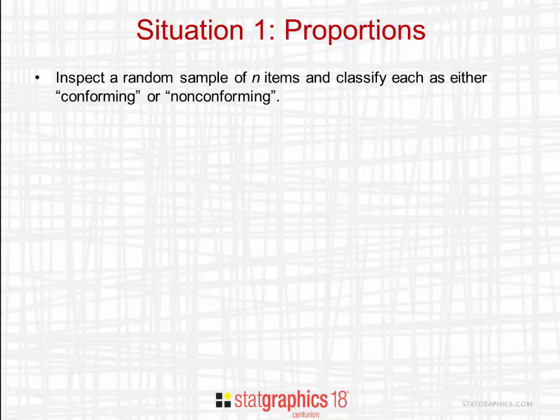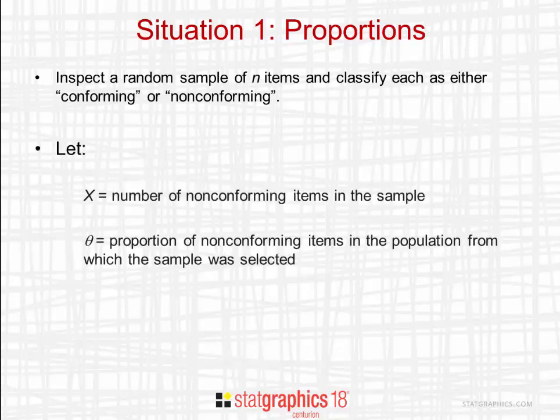We'll start by considering estimation of the proportion of non-conforming items. Suppose we inspect a random sample of n items from a process and classify each item as either conforming or non-conforming. Let X be the number of non-conforming items in the sample. Let theta be the proportion of non-conforming items in the entire population from which the sample was selected.